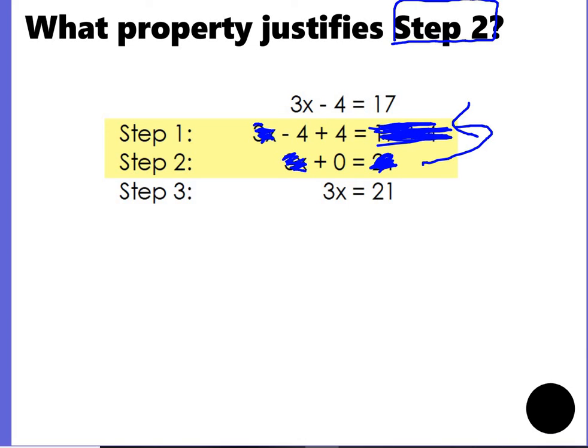Now I can look at this. I've got a negative 4 plus 4 and that gives you 0. That is called the additive inverse because if you have a negative 4, to get rid of it, you have to add 4.